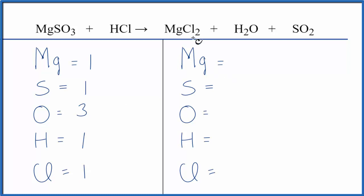On the product side we have one magnesium, sulfur is one, oxygens we have one plus these two here. Be careful there. We have three total oxygens. Hydrogens, two, and chlorines, two.